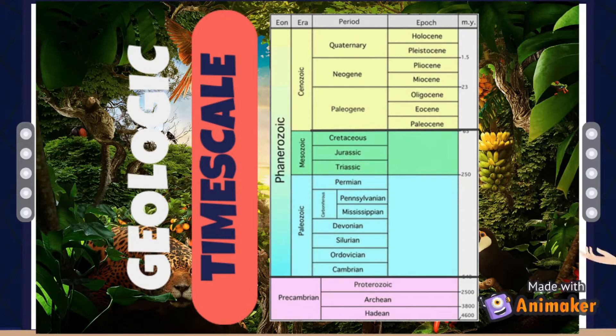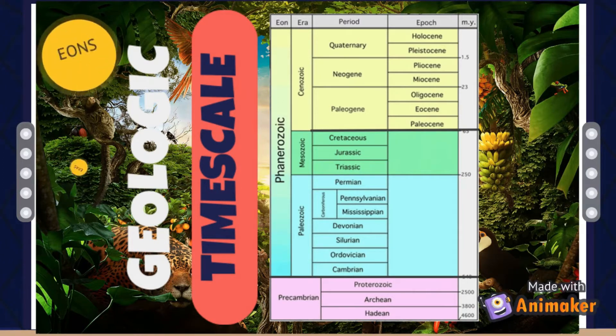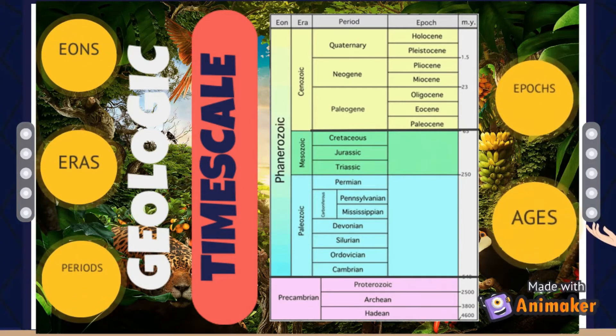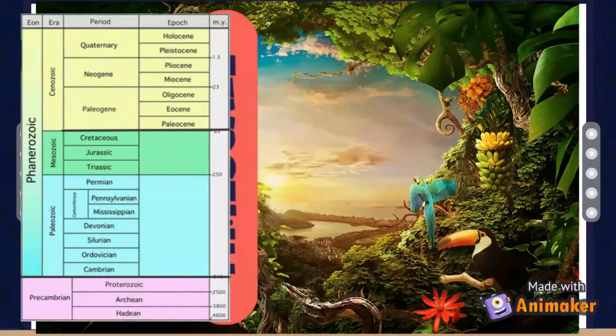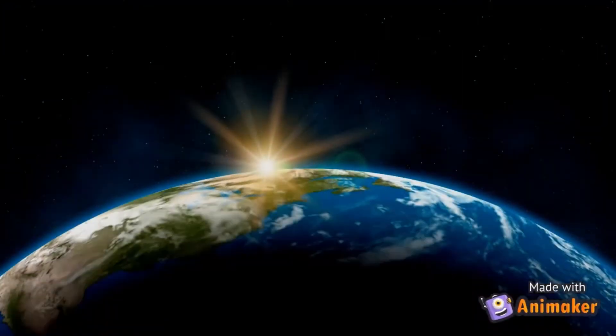It subdivides all time into named units of abstract time called eons, eras, periods, epochs, and ages. Now on to our Earth's history.